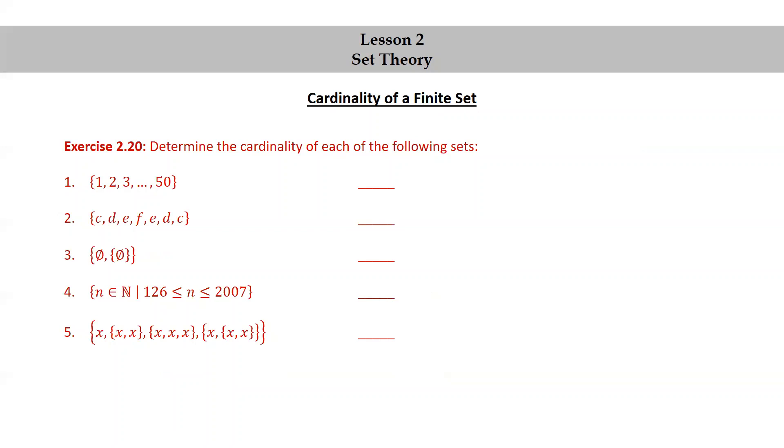The first one, the set consisting of {1, 2, 3, ..., 50}. Well, that's just 50.